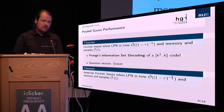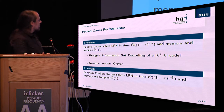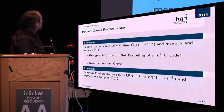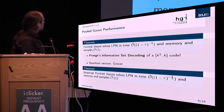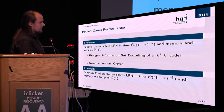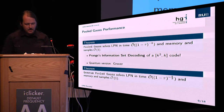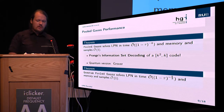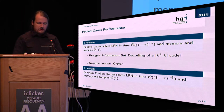Now we can also create a quantum version, because we have only a polynomial number of samples — nothing prevents us. We apply a simple Grover search, and for those familiar with Grover, it's unsurprising that we can put a square root around the running time of the classical algorithm to get the quantum version.